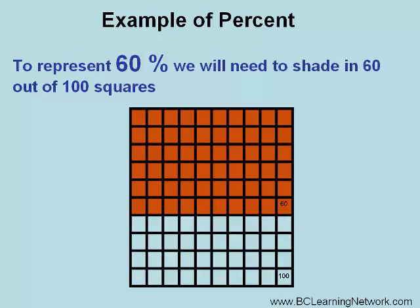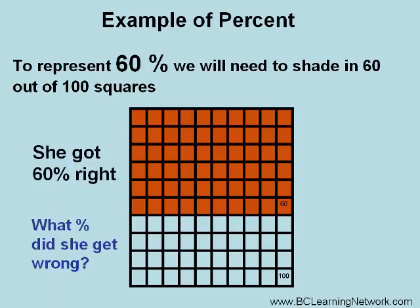To represent sixty percent, we need to shade in sixty out of the one hundred squares. The shaded part is the sixty percent that Millicent got right. What percent did she get wrong?